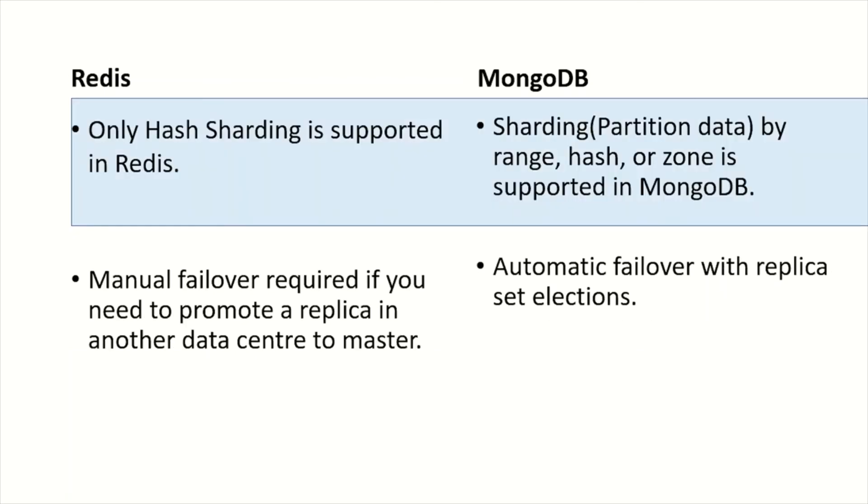Coming to sharding — that is the partitioning of data — only hash sharding is supported in Redis, meaning only partition based on hashes is supported. In MongoDB, sharding or partition by range, hash, or zone is supported.